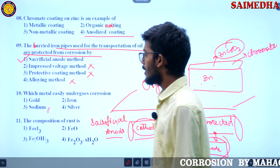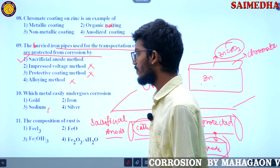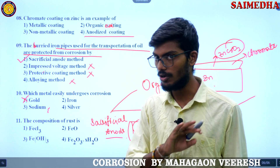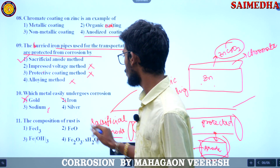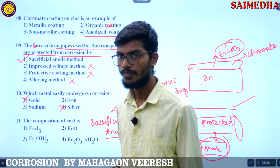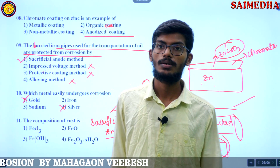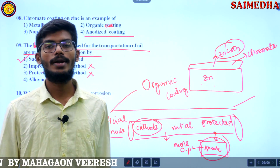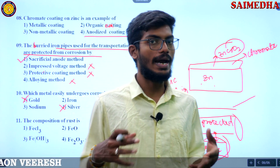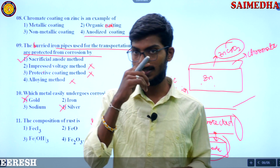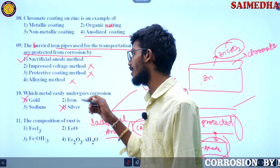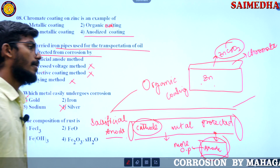Next question: which metal easily undergoes corrosion? Gold will not undergo corrosion. Silver also will not undergo corrosion because they are stable metals. Sodium — most people get this wrong. They are more familiar with iron, so they choose iron without considering sodium.